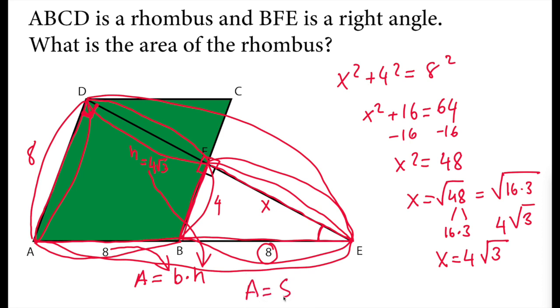So area will be 8 times 4 square root of 3 and the total area will be 32 square root of 3 as a result. So this is our solution.